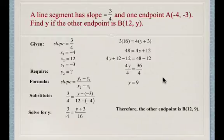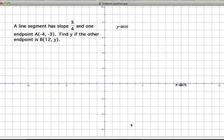Therefore, the other endpoint is 12, 9. Now if we take a look at what this looks like on a graph, we'll start by plotting point A, which is negative 4, negative 3. So we go over to negative 4, down to negative 3, and plot our point.